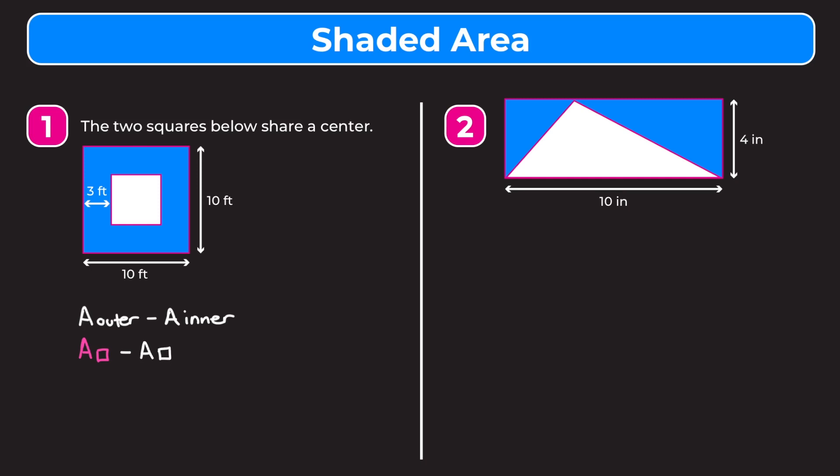Now we have to remember how to find the area of a square. To find the area of a square we're just going to multiply the side lengths together, or square the side lengths. So the area of this pink square is going to be the side length of 10 feet squared — 10 squared.